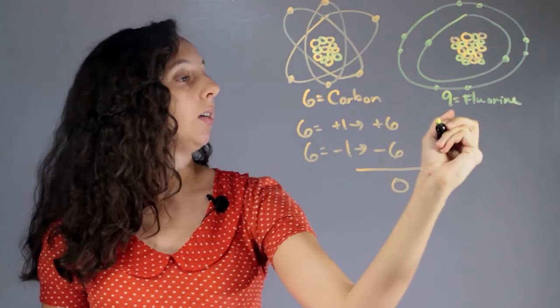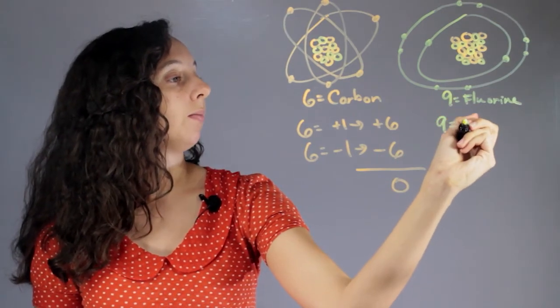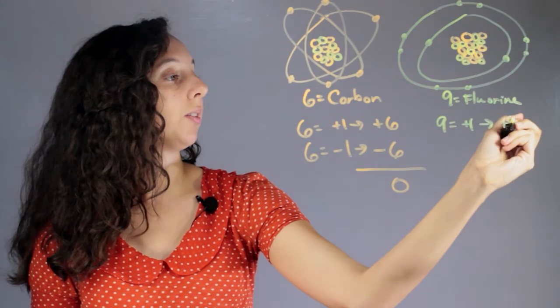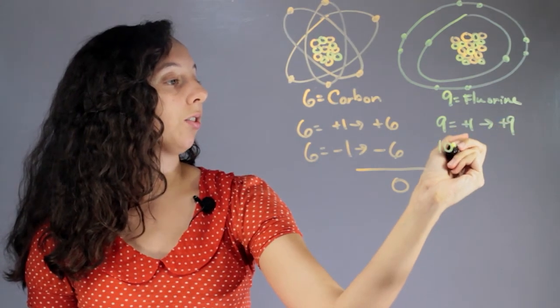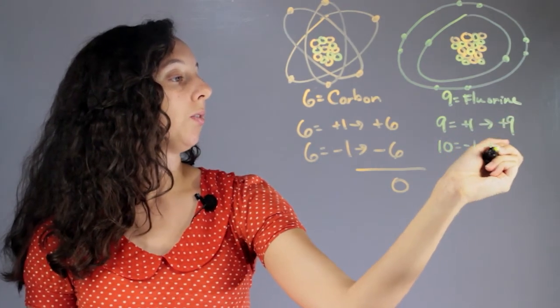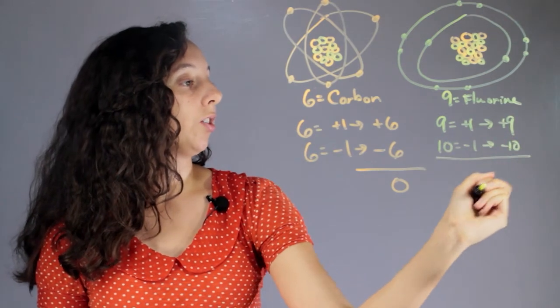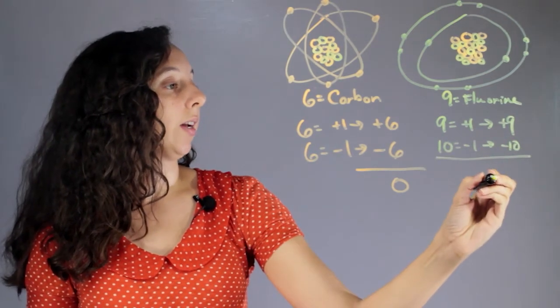Now, this guy has nine protons, each with plus one, so a total of plus nine, and he has ten electrons, each with minus one, so a total of minus ten. So, the overall charge of this atom is negative one.